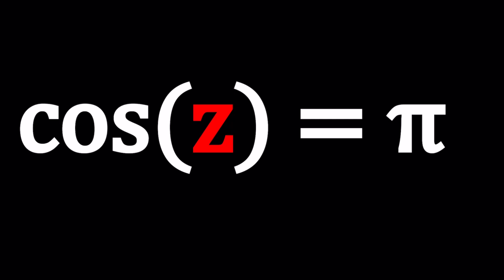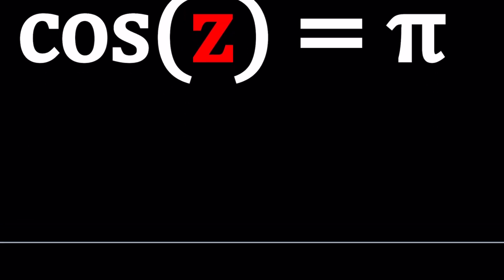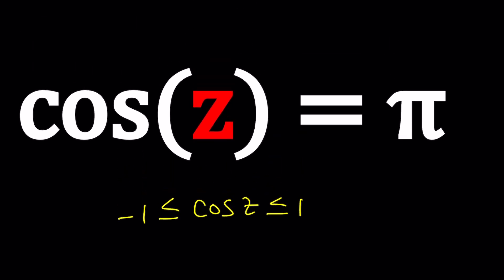First of all, I want to tell you something. Cosine z is between negative 1 and 1 inclusive if z is real. What is that supposed to mean? Contrapositive logic. This means, because cosine z is not less than or equal to 1 in this case, that means z is not real. z is not real.